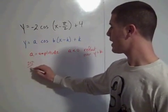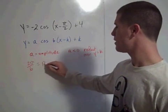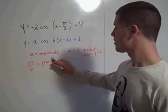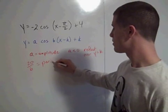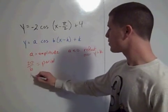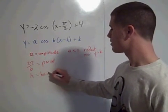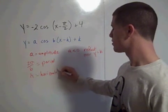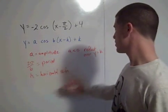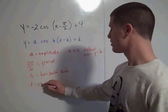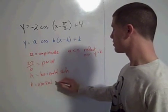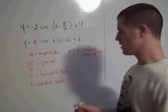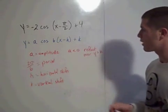Two pi divided by the b value is the period. H is your horizontal shift. And k is the vertical shift.